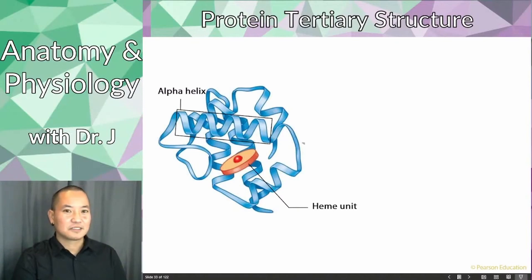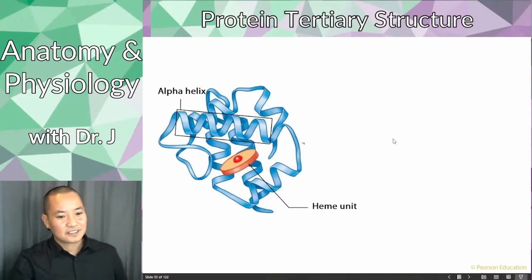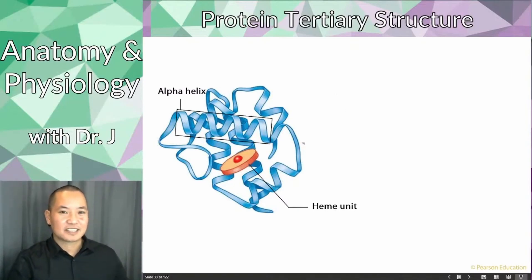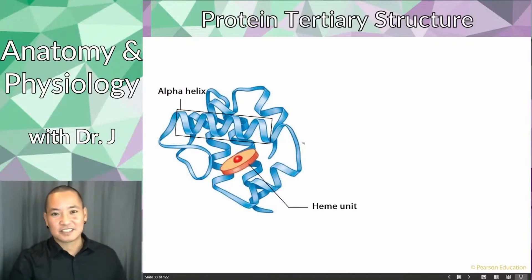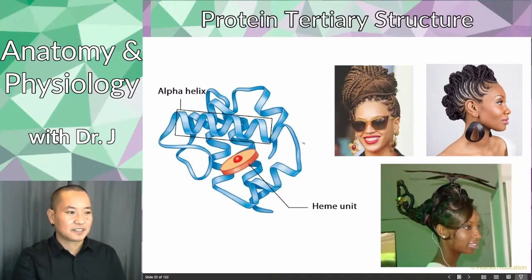Tertiary structure is when you take those basic secondary structures and make even more complex three-dimensional arrangements by further folding. Here we have an alpha helix from secondary structure incorporated into a tertiary structure. Extending the hair analogy — if the secondary structure is a styled strand of hair, tertiary structure is when you link multiple of those styled structures together into fancier, more complex arrangements.